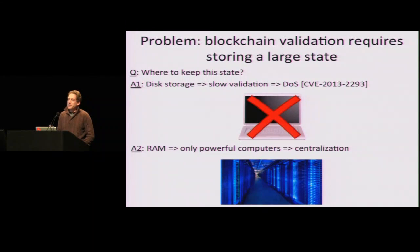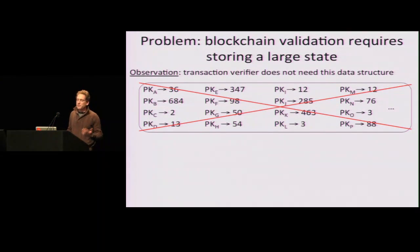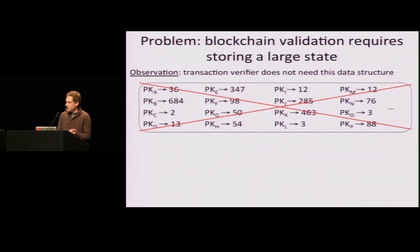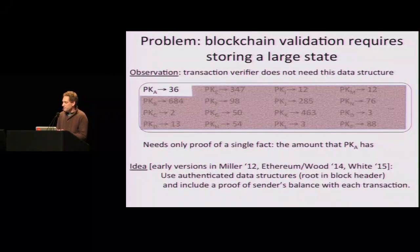So we'd like to be able to enable validation on weak devices. The observation that has been made before us is that you really don't need to store this huge data structure. As a verifier of a transaction by Alice, you're only interested at the moment in how much money Alice has — the rest is there but you're not interested in it. So you want a proof of this one single fact: how much Alice has.